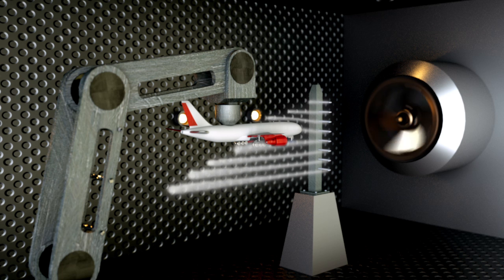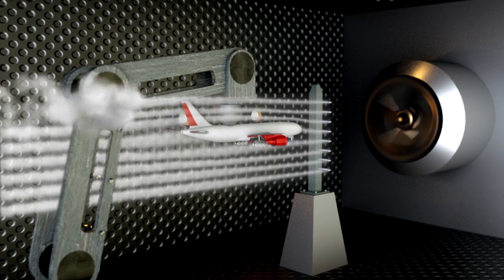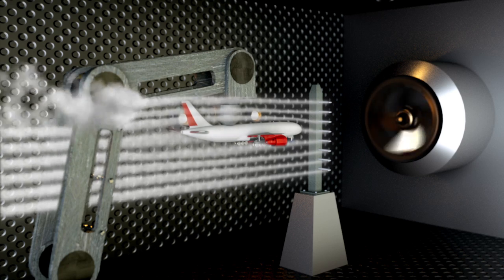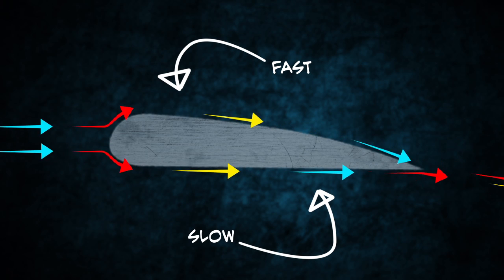However, wind tunnels with powerful fan systems and nebulizers have been used to shed some light on it. In a wind tunnel, we can see, for example, that air passes faster on the top than it does on the bottom of an airfoil. But why?